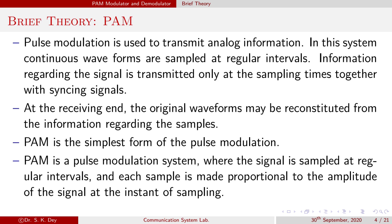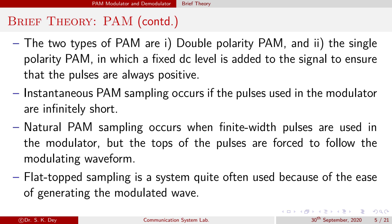PAM is the simplest form of pulse modulation. PAM is a pulse modulation system in which the signal is sampled at regular intervals and each sample is made proportional to the amplitude of the signal at the instant of sampling. There are two types of PAM signals: double polarity PAM and single polarity PAM. In single polarity PAM, a fixed DC level is added to the signal to ensure that the pulses are always positive.